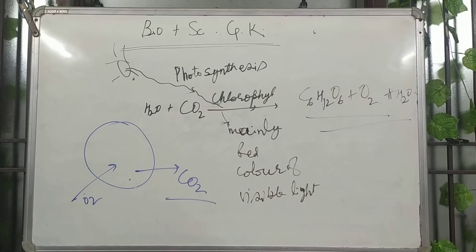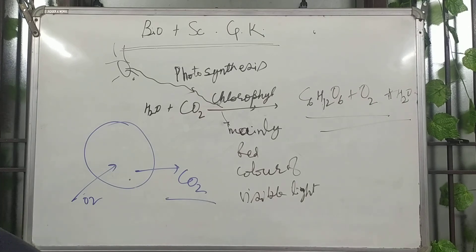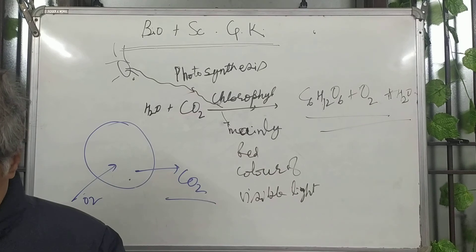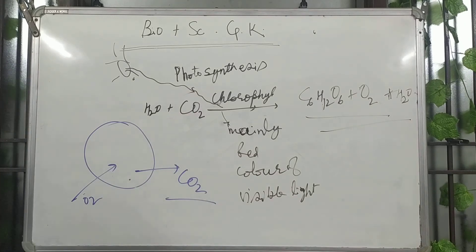Next question: thyroid gland growth is abnormal due to which reason? Options are iron, calcium, potassium, or iodine. Thyroid abnormality is due to deficiency of iodine.